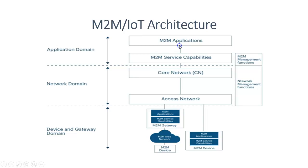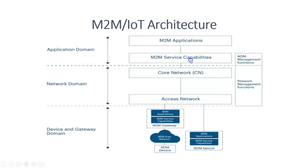The M2M application is a smart application that uses data for automation, monitoring, and control. M2M service capabilities are responsible for enabling interoperability, data processing, security, and device management. It consists of APIs and middleware.